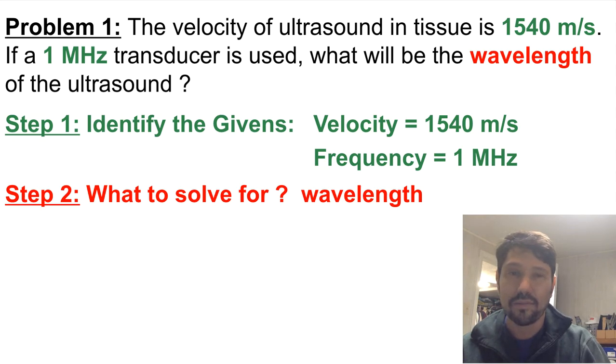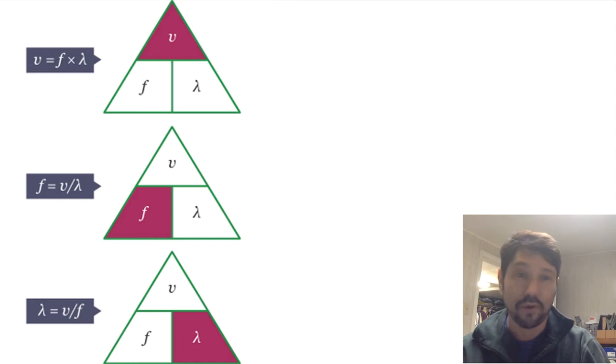So we're going to do the math. To do that we're going to have to know a formula. We're solving for wavelength, so let's pick our formula: wavelength equals velocity over frequency. That'll be the formula to use.